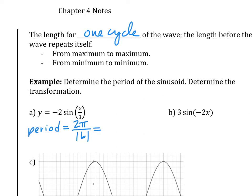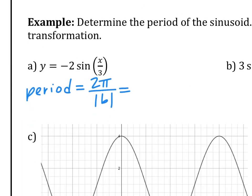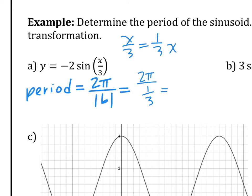For question A, what number is B? It's 1/3, because x over 3 is the same as (1/3)x. So B is 1/3. The period is 2π over 1/3, which equals 6π. That means it takes 6π for this cycle to complete — it's a very long graph.